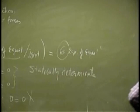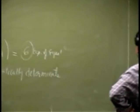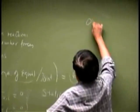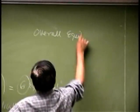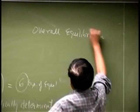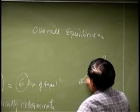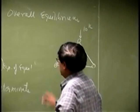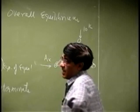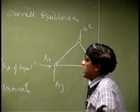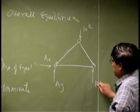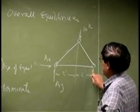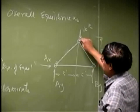After confirming we have enough equations, the first step is to consider what is called the overall equilibrium. We redraw the same truss with the 10-kip force, and label the reactions: AX and AY at the hinge, and BY at the roller. The geometry is five feet, five feet, and five feet.